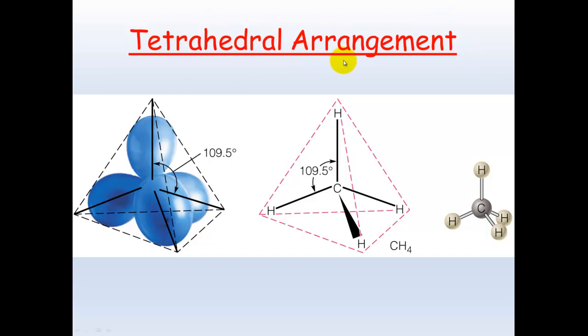Tetrahedral arrangement is much more common in atoms. Carbon and many other atoms will bond to four other atoms to form this tetrahedral shape, where each bond is 109.5 degrees away from one another, as far apart from each other as they can be.